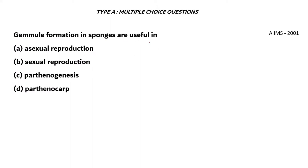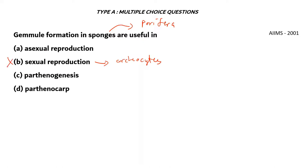Next question. Gemmule formation in sponges is useful in what? Gemmules are found in sponges, which are part of porifera — the lowest phylum in Kingdom Animalia. They do not have advanced sexual reproduction. Even in sexual reproduction, they have archaeocytes which are used for regeneration. Option B — sexual reproduction — is the wrong answer. Gemmules are not formed due to sexual reproduction.